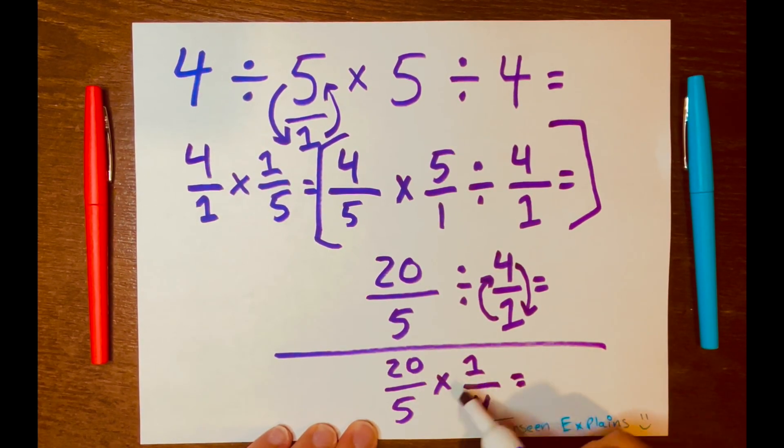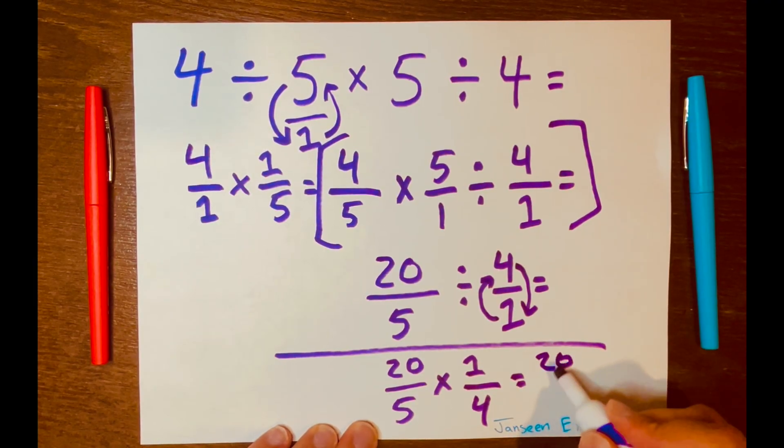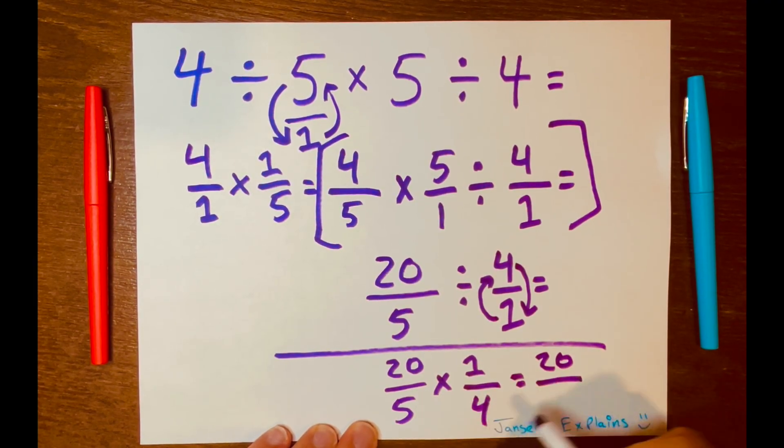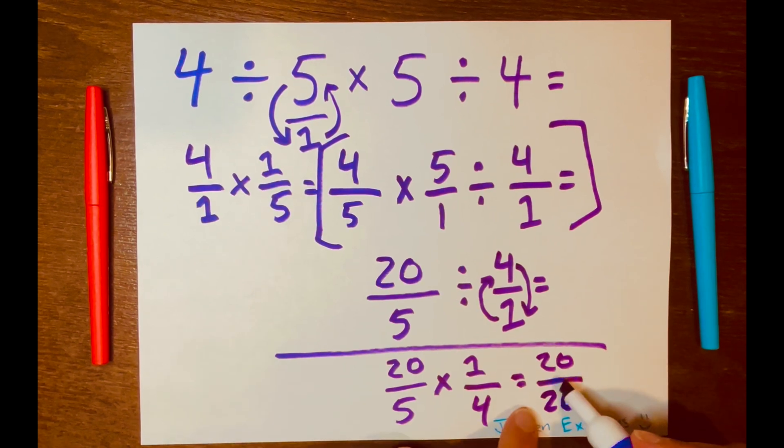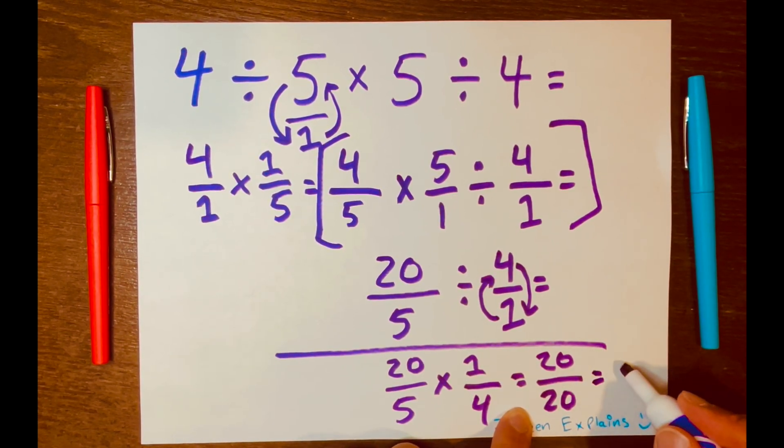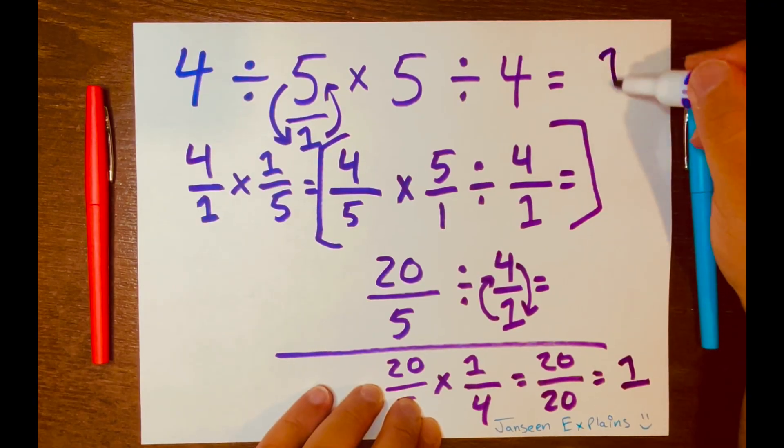And then we just multiply across. So 20 times 1 is 20 over 5 times 4 is 20. And 20 divided by 20 equals 1. So your answer is 1.